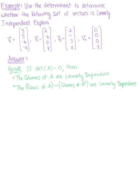Use the determinant to determine whether the following set of vectors is linearly independent, and explain. To get us started, let's recall that if the determinant of a matrix is 0, then the columns of matrix A are linearly dependent, and the rows of A — which are equivalent to the columns of A transpose — are linearly dependent.